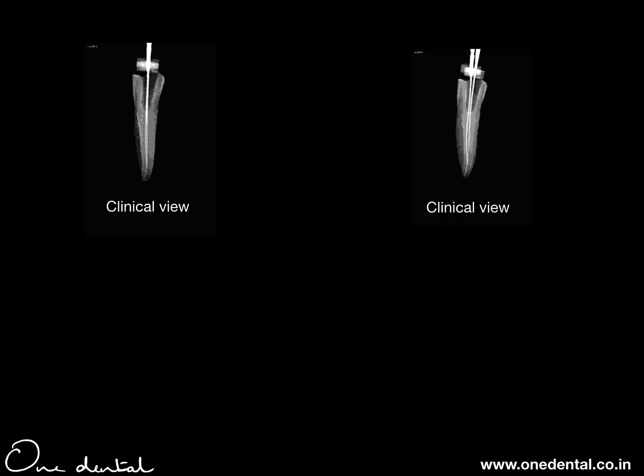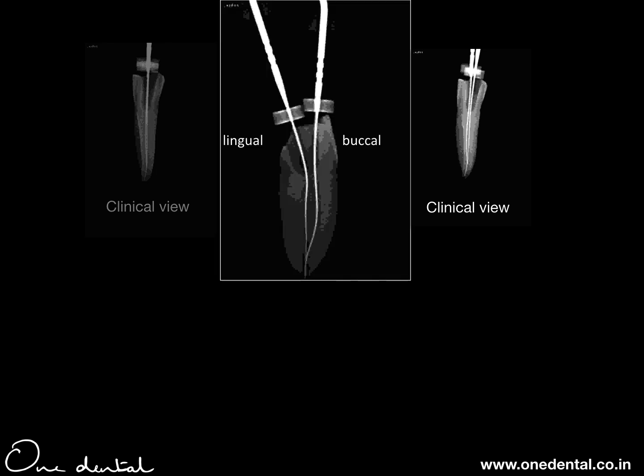When you work on the buccal canal, you typically get a straight-on radiographic picture. You might take an angled radiograph — a SLOB, mesial, or distal — but what still happens is you don't know exactly the separation between the canals. You may have to angulate even more horizontally. This is an angle we never get to see intraorally.